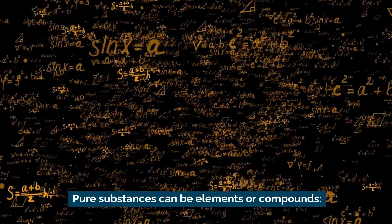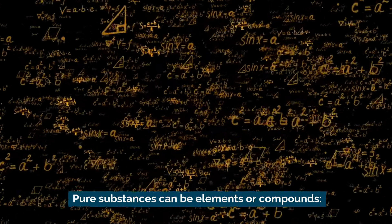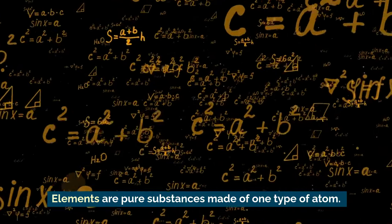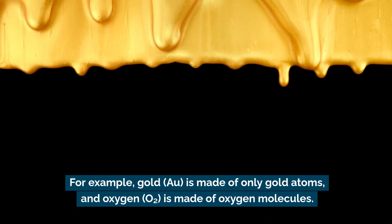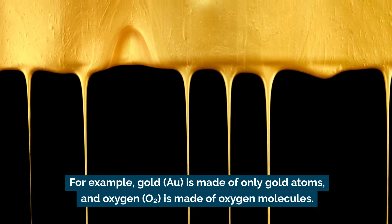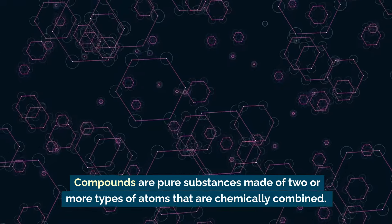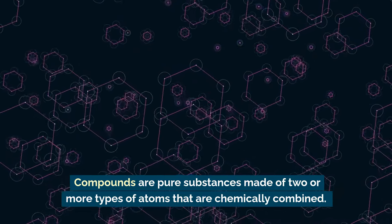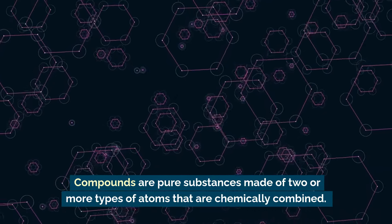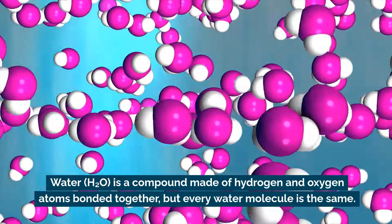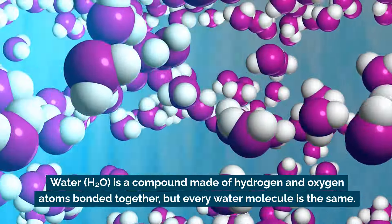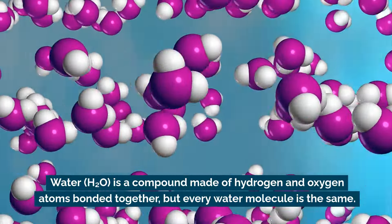Pure substances can be elements or compounds. Elements are pure substances made of one type of atom. For example, gold is made of only gold atoms, and oxygen is made of oxygen molecules. Compounds are pure substances made of two or more types of atoms that are chemically combined. Water is a compound made of hydrogen and oxygen atoms bonded together, but every water molecule is the same.